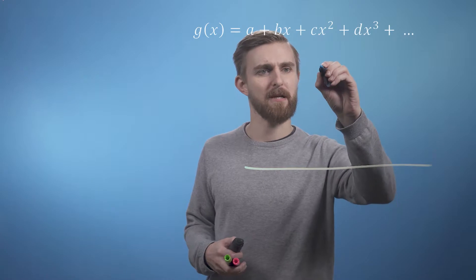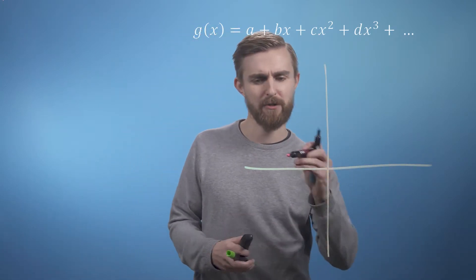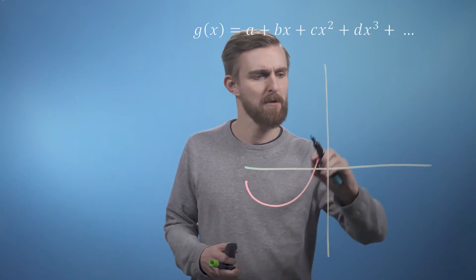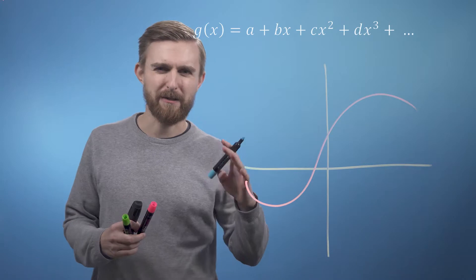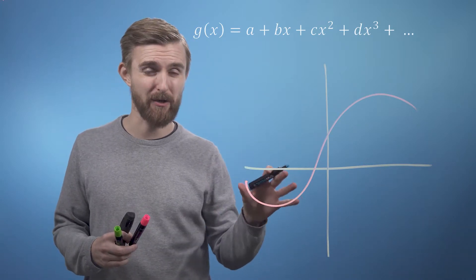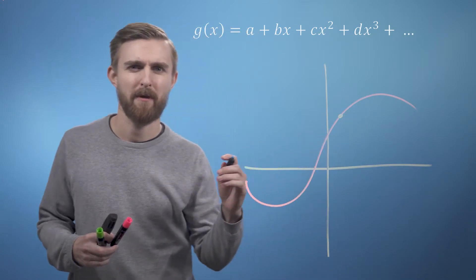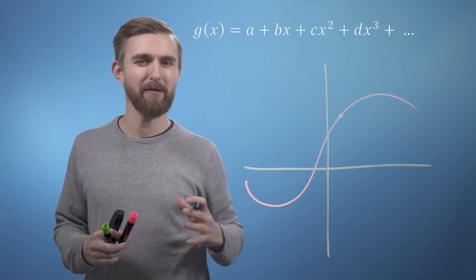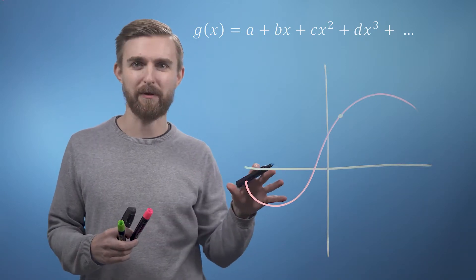If we start with something like this where we have a function and we're just making it up, perhaps shaped like this, all we're going to do is focus on one particular point on this curve. So let's say this point here, and then we're going to start building our function by trying to make it more and more like the point that we've chosen.